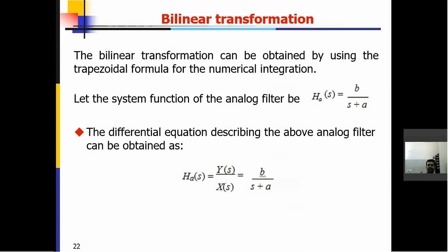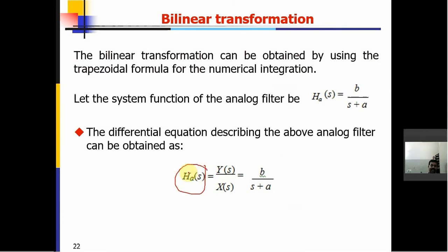The bilinear transformation can be obtained by using the trapezoidal formula for numerical integration. The system function of an analog filter H_A(S) is equal to B divided by (S plus A). This system function can be written as output divided by input: Y(S) over X(S) equals B divided by (S plus A).